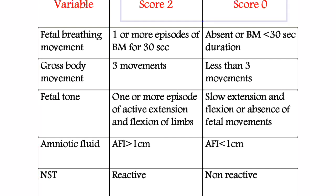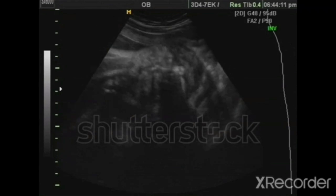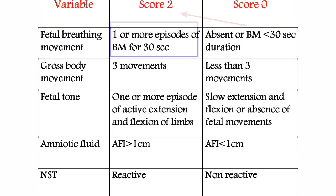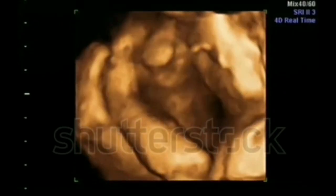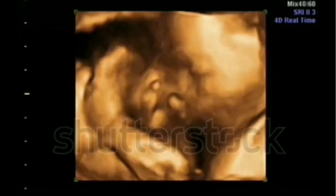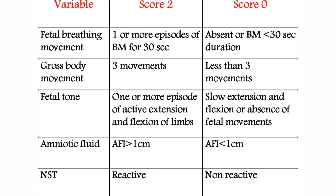Here you can see the BPP scoring chart. It shows five components or variables, each scored either two or zero — the maximum score is two and the minimum is zero. The first parameter is fetal breathing movement, assessed by ultrasonography. If one or more episodes of fetal breathing movement are present in 30 minutes, we give a score of two. If fetal breathing movements are absent, we give a score of zero. The second variable is gross body movement — if three or more movements are found in a 30-minute interval, score is two; fewer than three movements gives a score of zero.